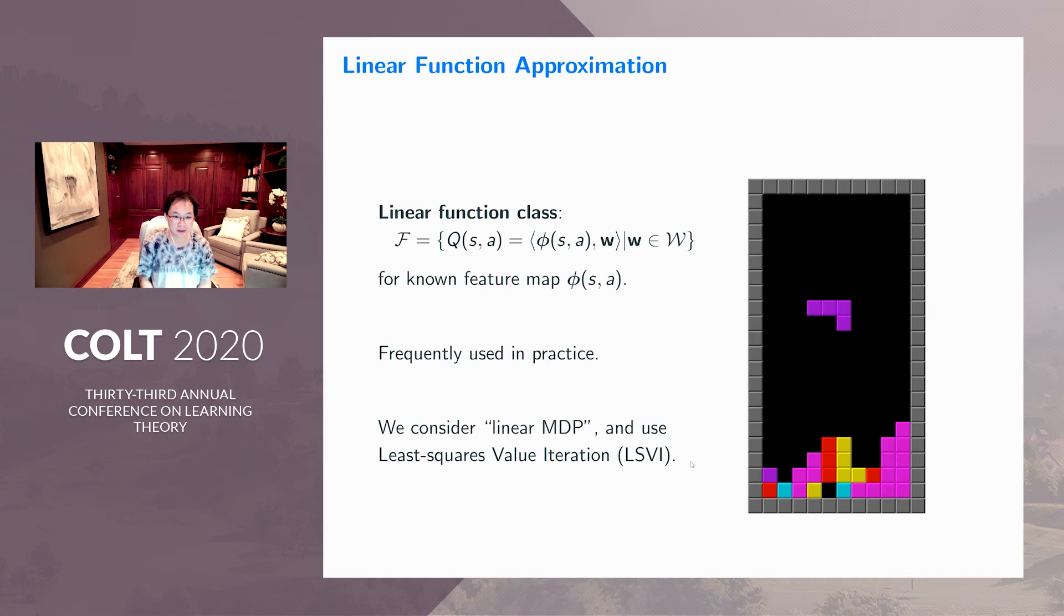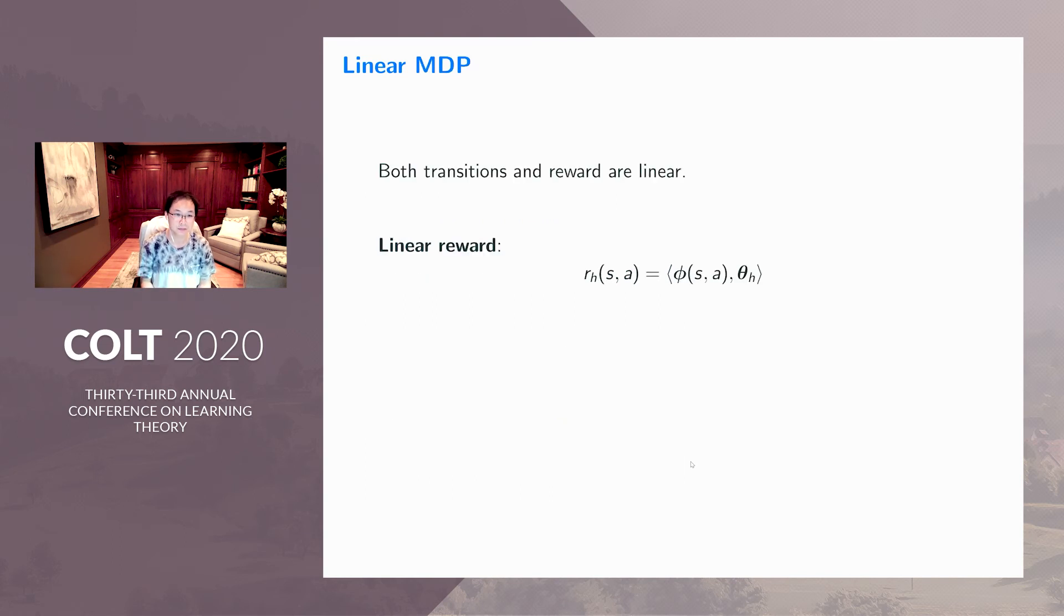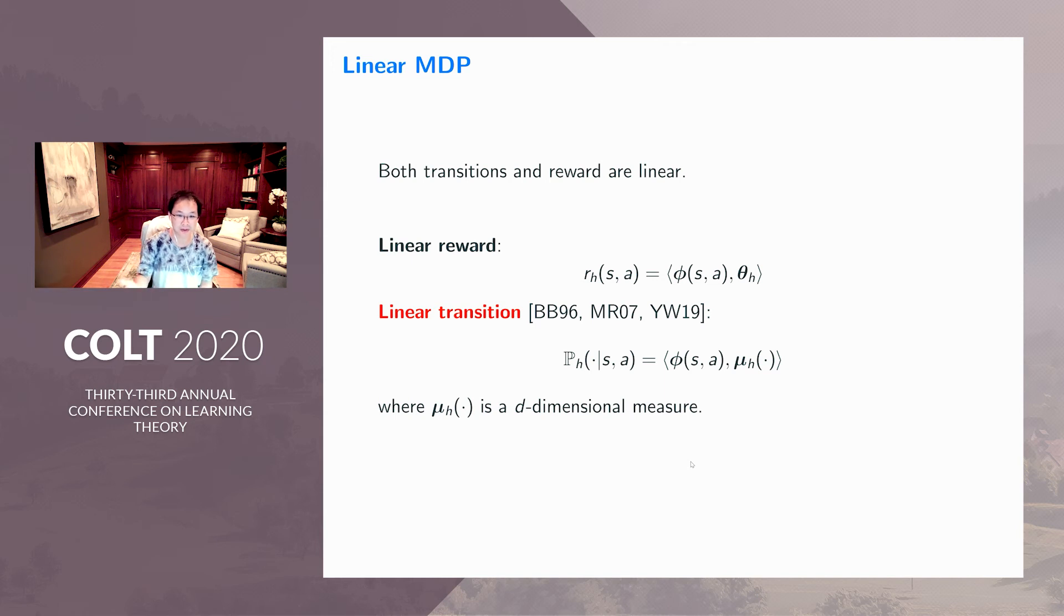In this paper, we consider a model called Linear MDP and use the classical algorithm called least squares value iteration for this linear function approximation. By Linear MDP, we assume that both rewards and transitions in this Markov Decision Process are linear. By linear rewards, we mean the reward is a linear function in terms of this feature map. By linear transition, it's a bit more tricky. We assume the transition of next states, conditional on current state-action pair SA, is a linear function—an inner product between the feature map phi and some d-dimensional measure called mu. It turns out both assumptions hold definitely in tabular MDP and also in some more general simplex feature spaces.